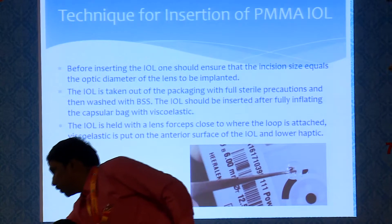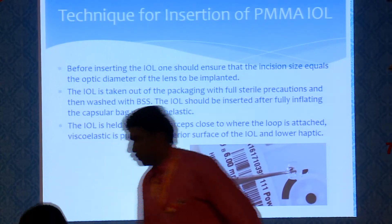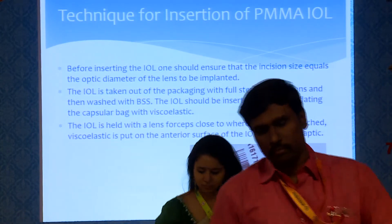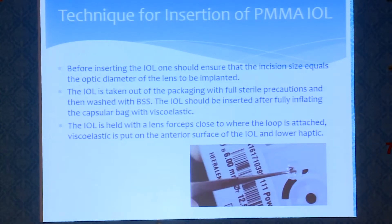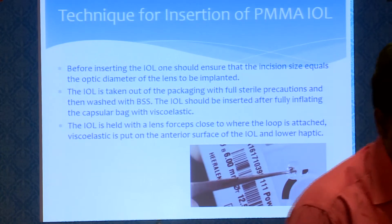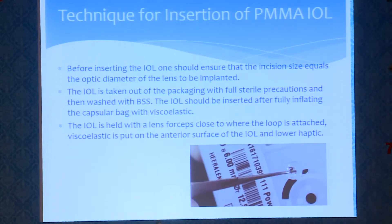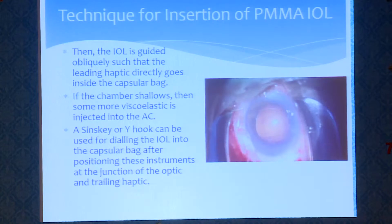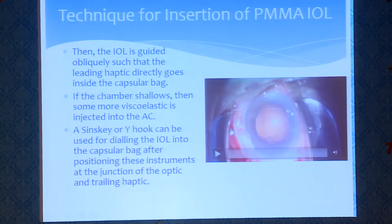Before inserting the IOL, one should ensure that the incision size equals the optic diameter of the lens to be implanted. The IOL is taken out of the package with full sterile precautions and then washed with balanced salt solution. The IOL should be inserted after fully inflating the capsular bag with viscoelastic. The IOL is held with lens forceps close to where the loop is attached, viscoelastic is put on the anterior surface of the IOL and the lower haptic, then the IOL is guided obliquely such that the leading haptic goes inside the capsular bag.